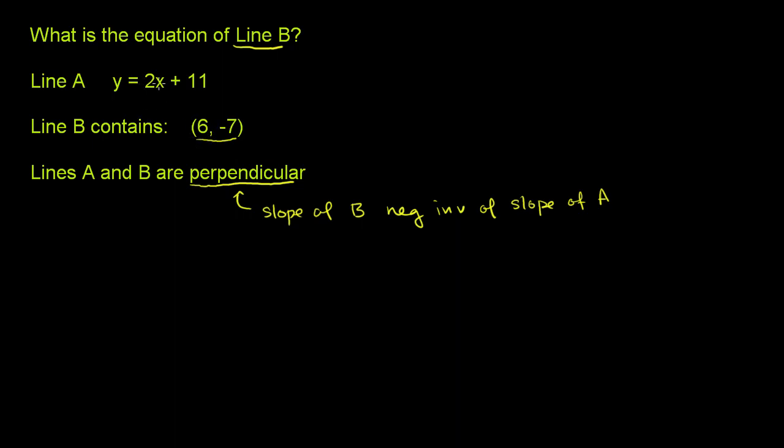So what's the slope of A? This is already in slope-intercept form. The slope of A is right there. It's the 2, mx plus b. So the slope here is equal to 2. The slope of A is 2.